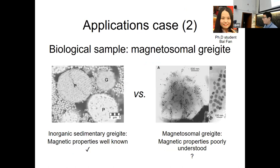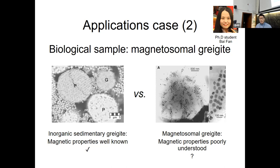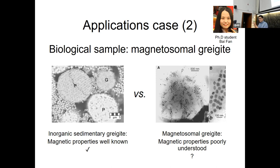The second example is a biological sample — greigite. There's also biogenic greigite produced by magnetotactic bacteria. For quite a long time, individual particles look similar, but they have different origins. For a long time we were not quite sure about the properties of biogenic greigite. The difficulty is we don't have samples — this sulfide bacteria is not very stable, very difficult to culture, and you can't enrich it in nature. So we don't know their magnetic properties.